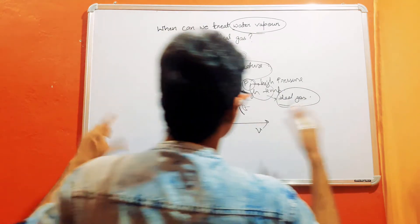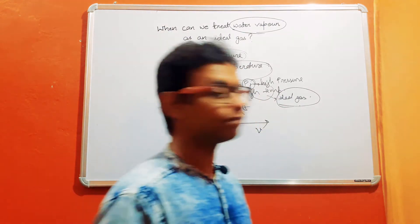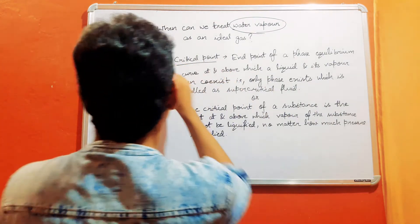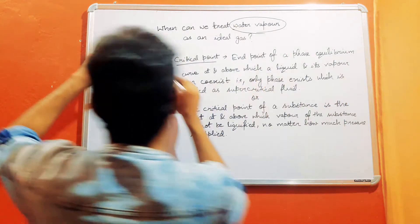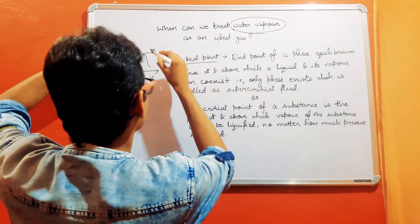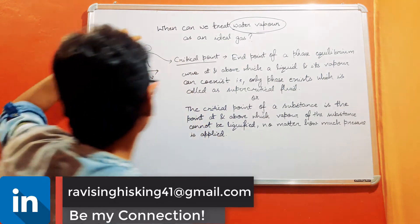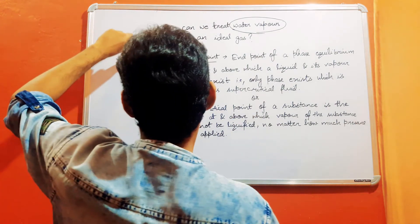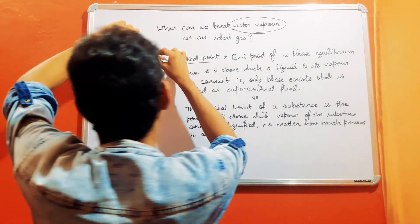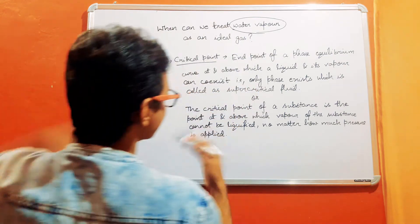I already defined the term critical point in one of my previous videos, but let us revisit it. The critical point is defined as the end point of a phase equilibrium curve. At and above this point, liquid and its vapor coexist together — meaning we cannot distinguish between the liquid and vapor phases, and only one phase exists, known as the supercritical fluid.